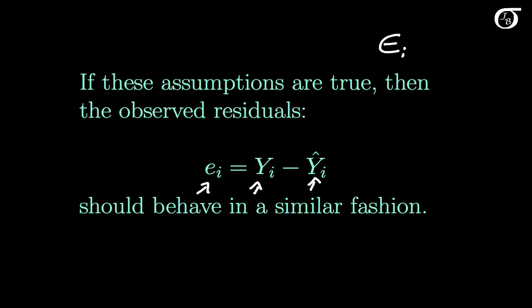And if the assumptions of our model are true, then these observed residuals should behave in a similar fashion. In other words, they should be approximately normally distributed with constant variance for all the different x values.